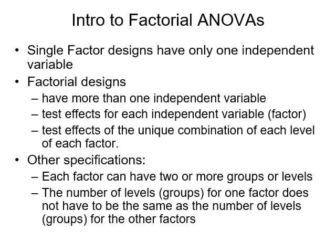Single factor designs — which is what we've dealt with so far in ANOVA — have only one independent variable and ask one hypothesis. Once we find statistical significance, the only additional question is the post hoc test: where's that difference? Factorial designs have more than one independent variable, often referred to as factors. They test the effects for each IV and also test the effects of unique combinations of each level of those factors. In a basic factorial design with two IVs, we'll have a hypothesis for IV1, a hypothesis for IV2, and a hypothesis about the potential interaction between them.